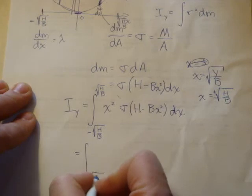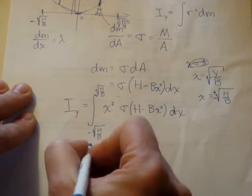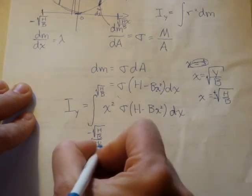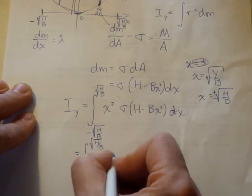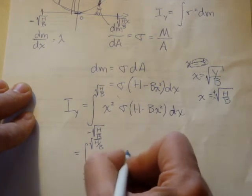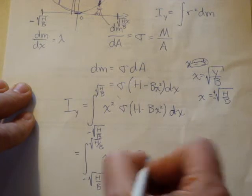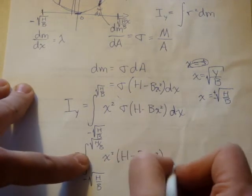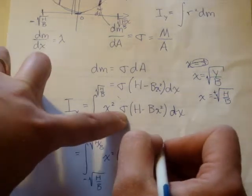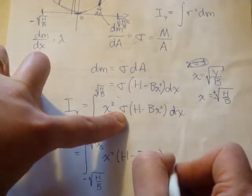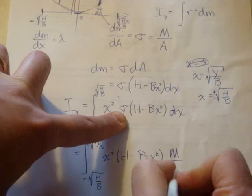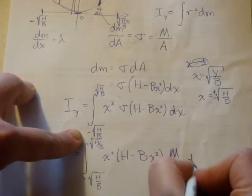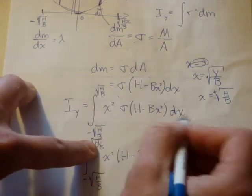We also need to worry about sigma. In sigma, to write each of these out explicitly, we're going to have x squared times h, which is just some constant, minus b, which is some constant, times x squared, which we're going to be integrating over that, times sigma, which we said is equal to the mass over the area times dx. I just moved the sigma over here.